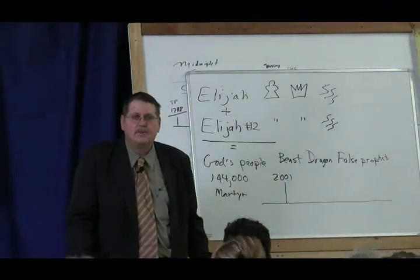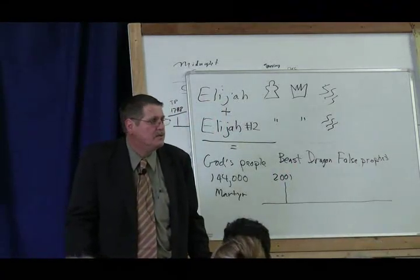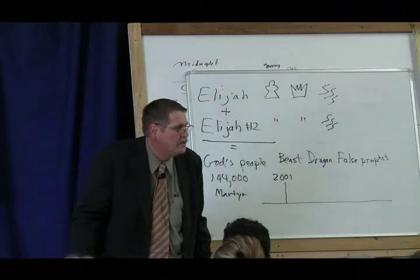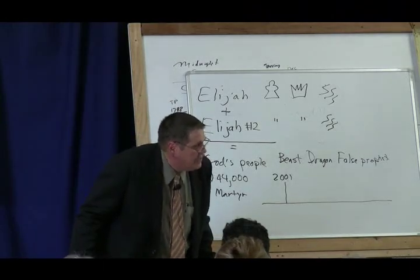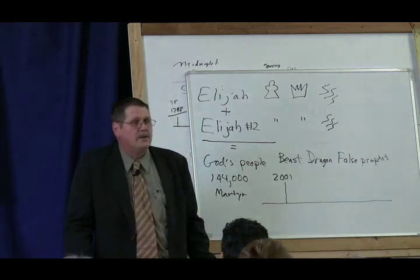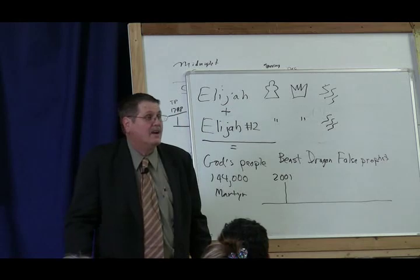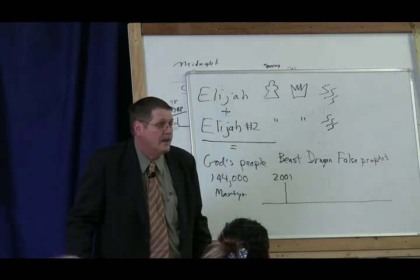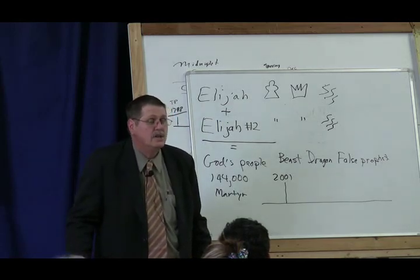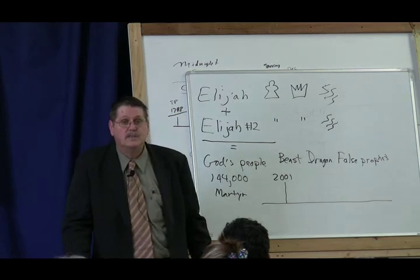But the further problem with this is if the latter rain is truly sprinkling at this time, it means that Acts chapter 3 is being fulfilled. And those people that are receiving the latter rain during this time here are those people that have sent their sins beforehand to judgment. And therefore, Christ is blotting out their sins. And therefore, Christ is judging them, and they are alive. Okay? And therefore, we're also saying that the judgment of the living is underway, and judgment begins at the house of God.